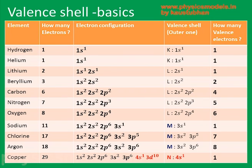Similarly, for carbon, the outermost shell — which is 2S2 and 2P2 — is called the valence shell, or the outer shell. How many electrons are there in the valence shell? You add 2 plus 2, which makes 4. So carbon has 4 valence electrons. That's how the number of valence electrons are counted.